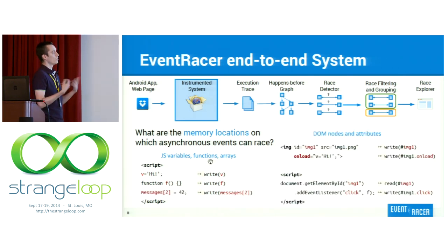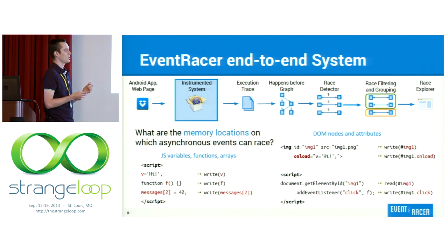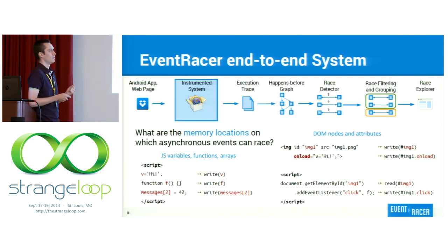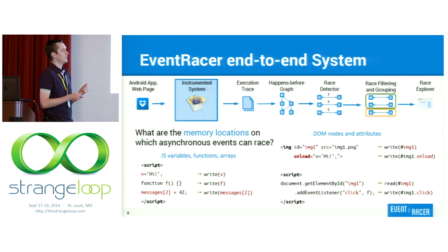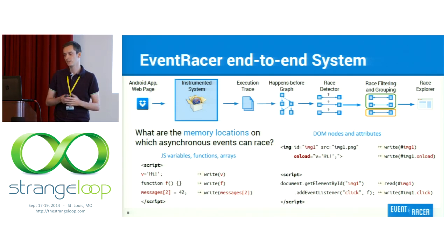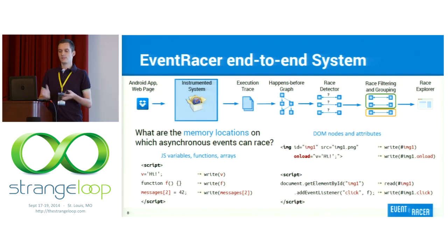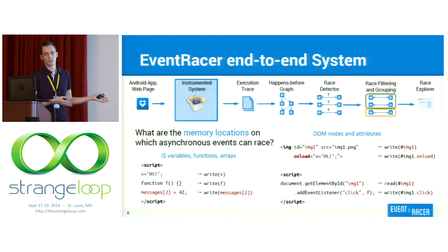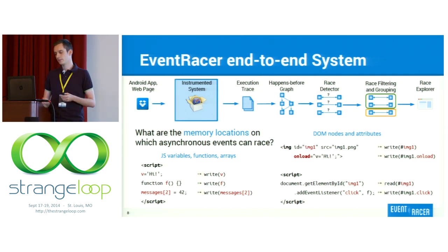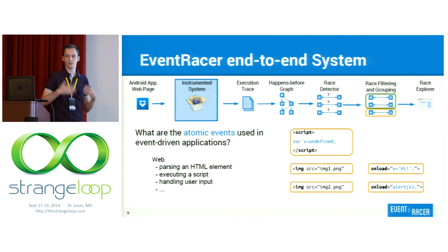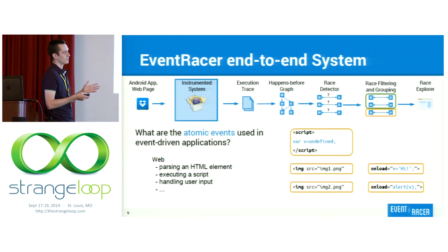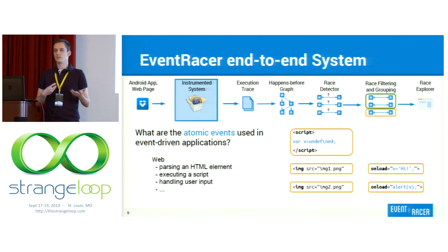We also want to capture some other memory locations: the DOM nodes and their attributes. If I define an HTML element in my web page, it would be translated to a write to the ID of image one. And also if I define some callback, it would be defined as a write, and then when I actually call it, it would be a read. Of course, this is specific to the system you want to instrument — this is for web pages, but you can imagine it would be similar for Android. The second thing we want to do is define what are the atomic events in our system: for web pages, it can be parsing an HTML element, executing a script, handling user input, and so on.